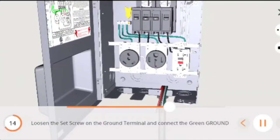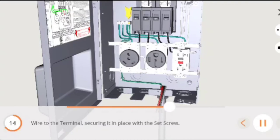Loosen the set screw on the ground terminal and connect the green ground wire to the terminal, securing it in place with the set screw.